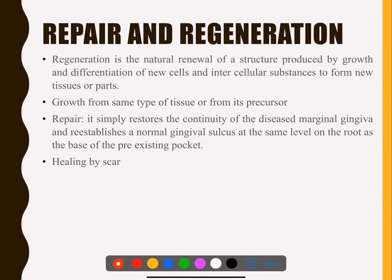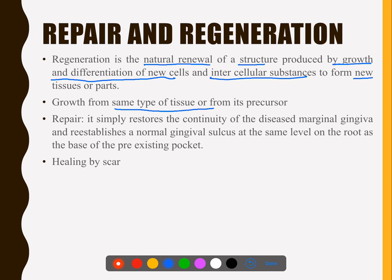Repair and regeneration are the end products of flap surgery or whatever periodontal surgery you do — it either ends with repair or regeneration. Regeneration is a natural renewal of a structure produced by growth and differentiation of new cells and intercellular substances to form new tissues — the same type of tissue or from its precursor. Repair is just restoring the continuity of the diseased tissue — healing by scar.